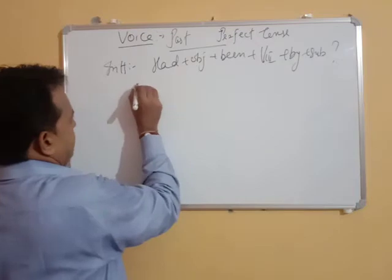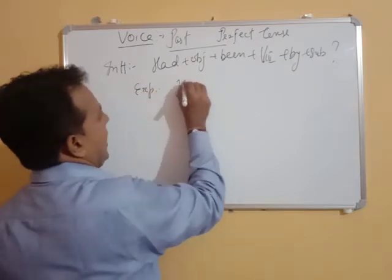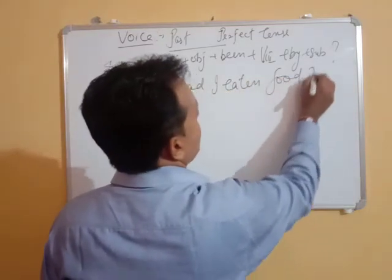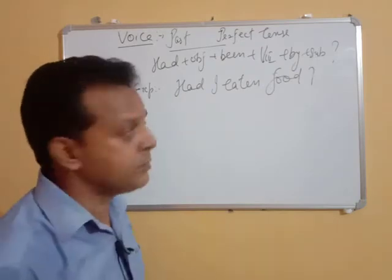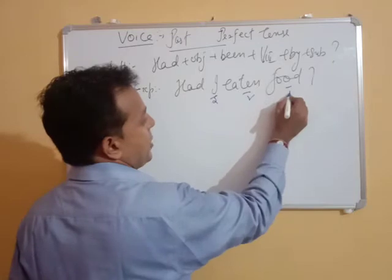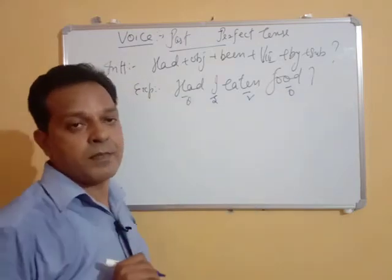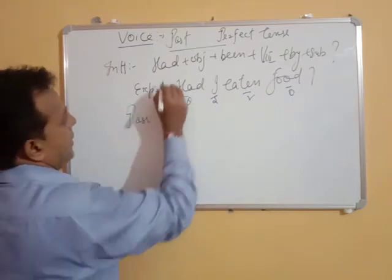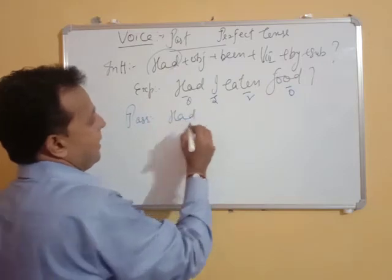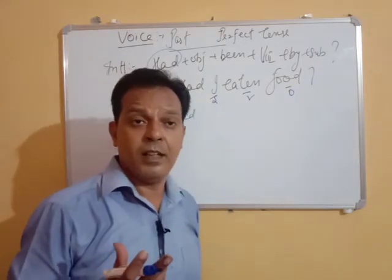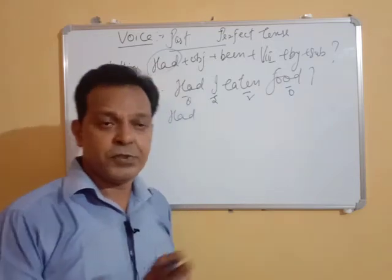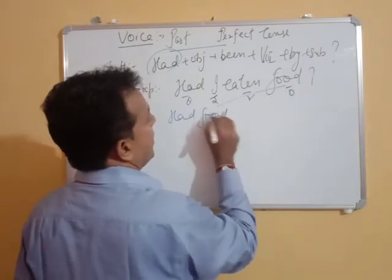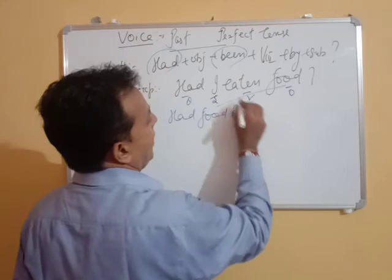Example: 'Had I eaten food?' — meaning 'क्या मैं खाना खा चुका था?' Here, 'I' is the subject, 'eaten' is the verb, 'food' is the object. Let's follow the rule and convert it to passive. Notice how easy it is — 'had' was there and 'had' remains. Nothing difficult. Just bring 'food' here, add 'been,' then 'eaten,' and 'I' comes back as 'me.'